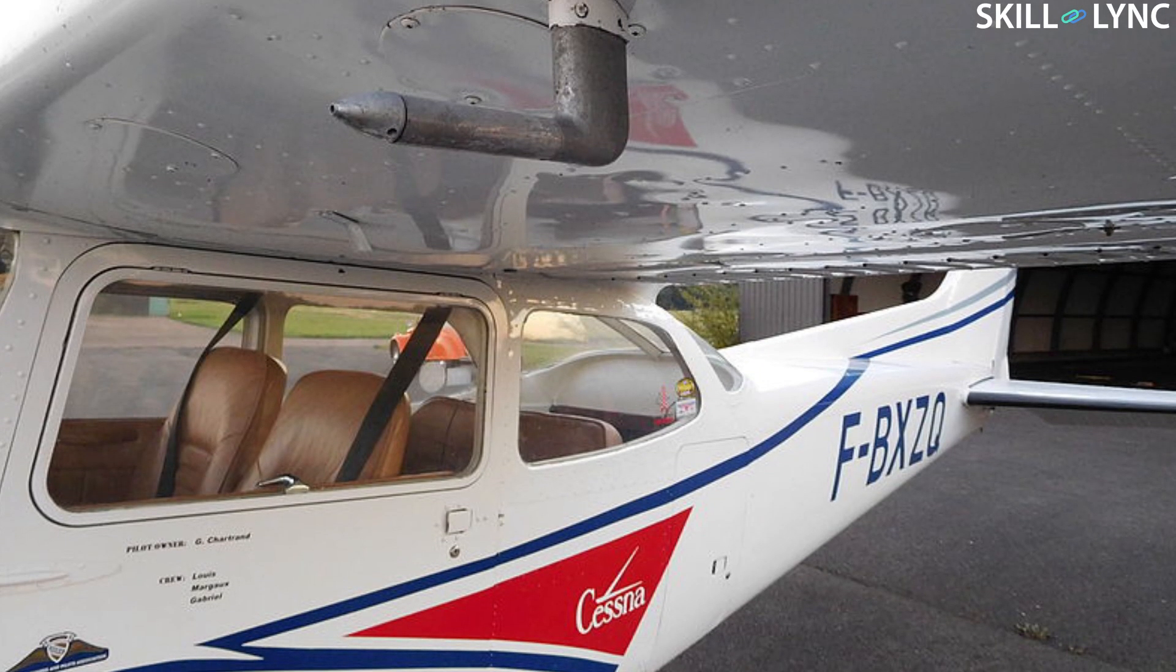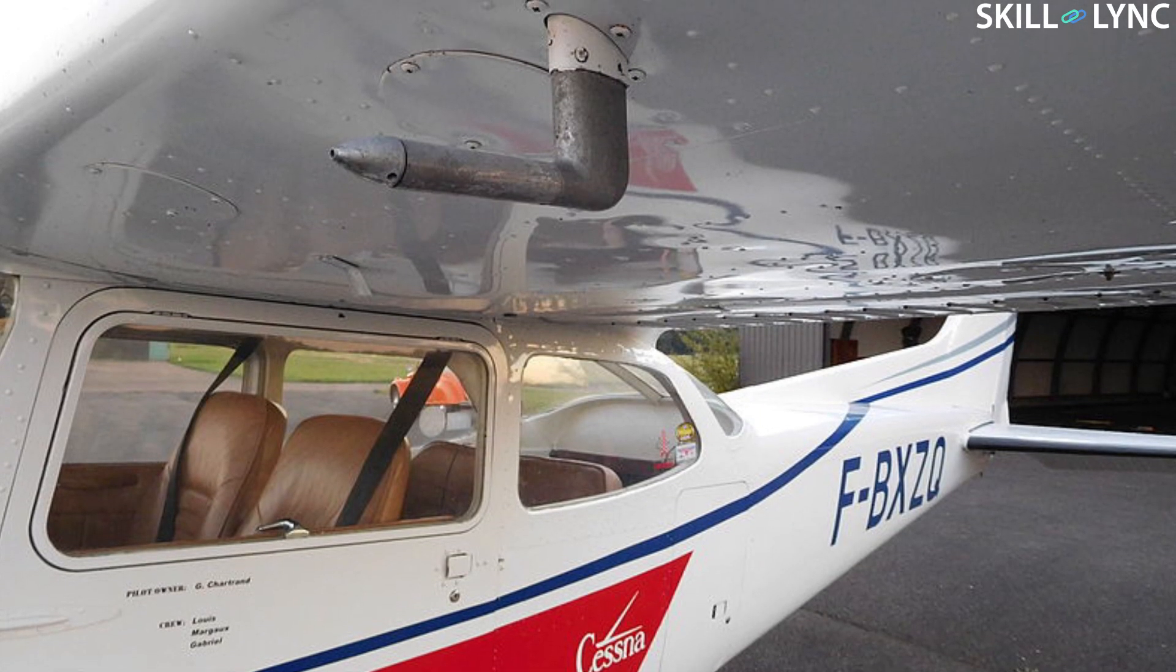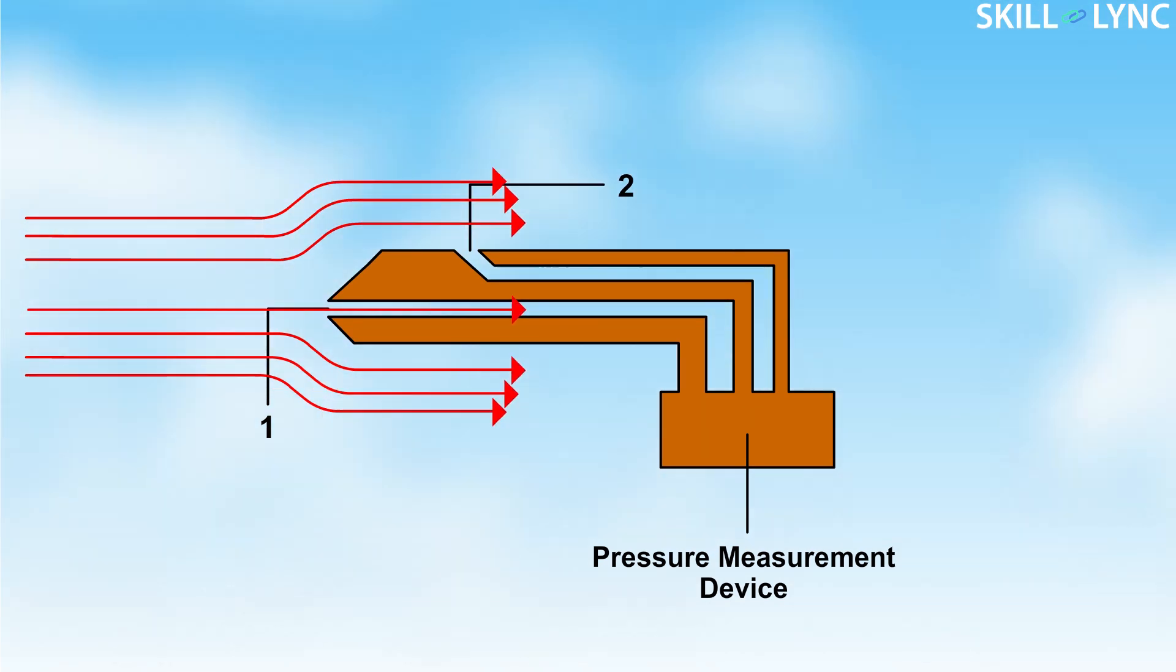The pitot tube is normally mounted on the fuselage or the wing of the aircraft. When the aircraft is stationary on the ground, the pressure developed in the first hole is equal to the pressure developed in hole two. The airspeed indicator shows zero.